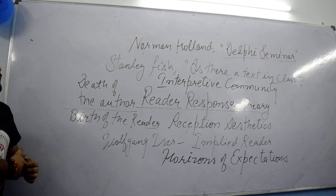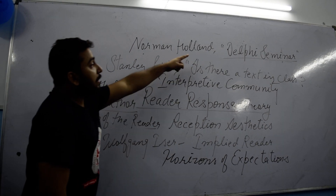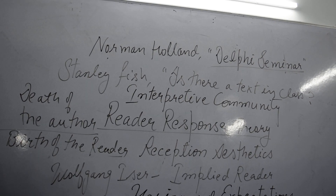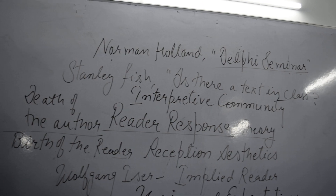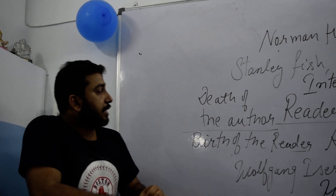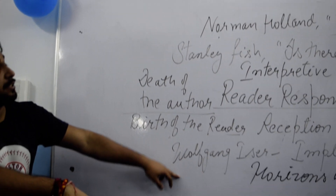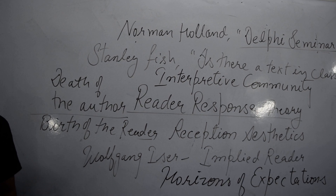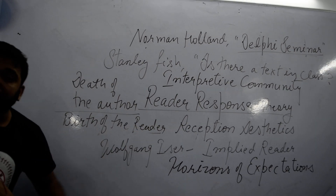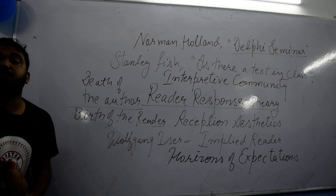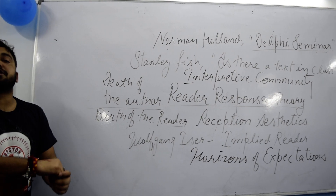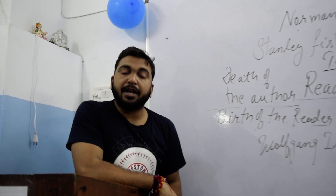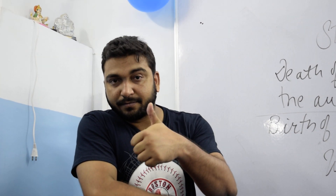Now we're going to talk about the key writers of Reader Response Theory. Norman Holland conducted a famous seminar called the Delphi Seminar, where he tried to gather interpretations of poems from various points of view — famously called the Delphi style. Important names to remember are Wolfgang Iser, Stanley Fish, Norman Holland, Roland Barthes, Hans Robert Jauss, and many others. These are the most important theories of Reader Response Theory. If you have more questions, you can contact me at 8587035827. Thank you so much.